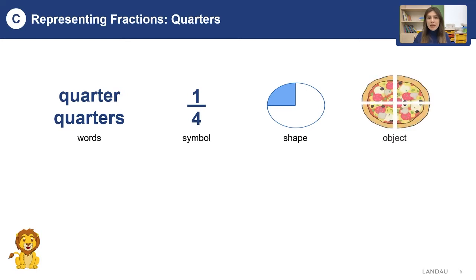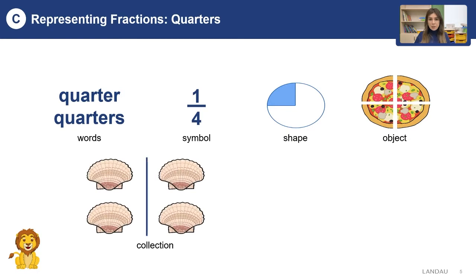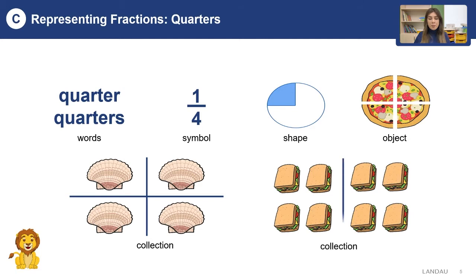Look at the object — it is a very delicious pizza and you can see it is divided into four parts, also called a quarter. And look at the collection. You can see all the collections are divided into four parts, and each smaller part is called a quarter.